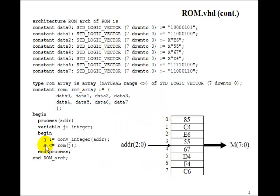And then the output m is just ROM sub j. So j can be the integer 0 to 7. So that's all you need to define a ROM.